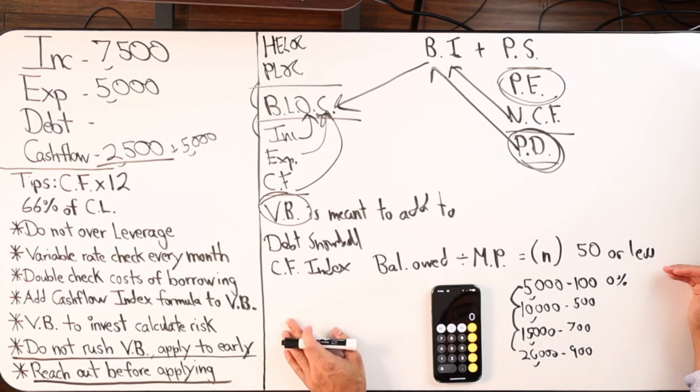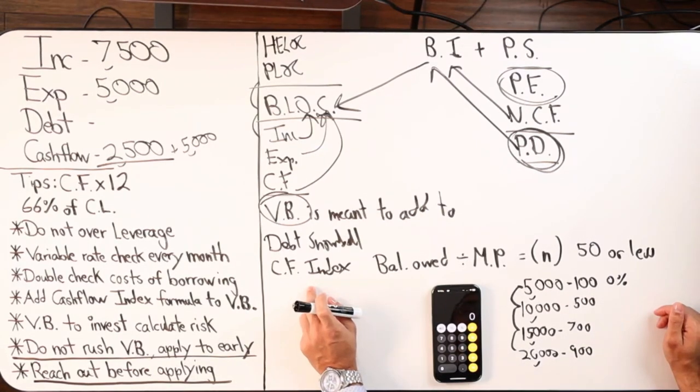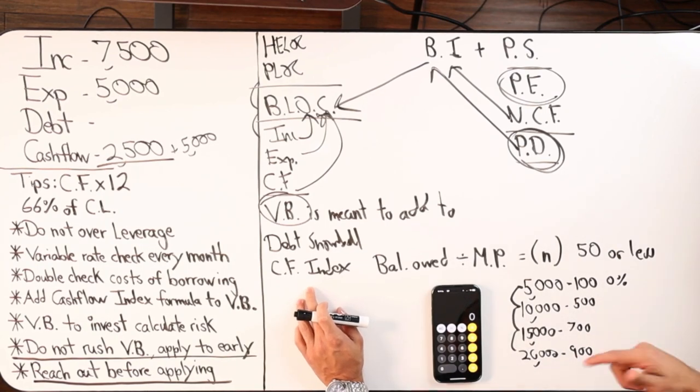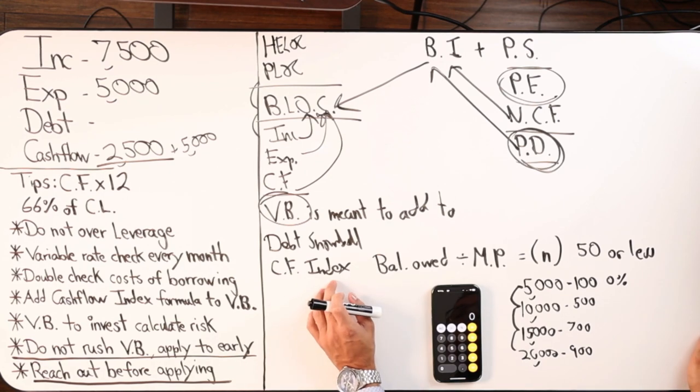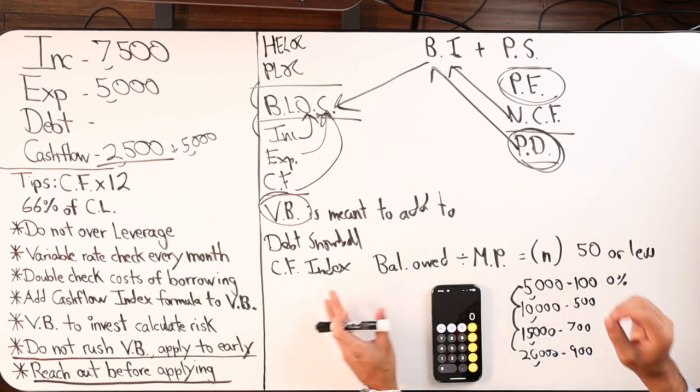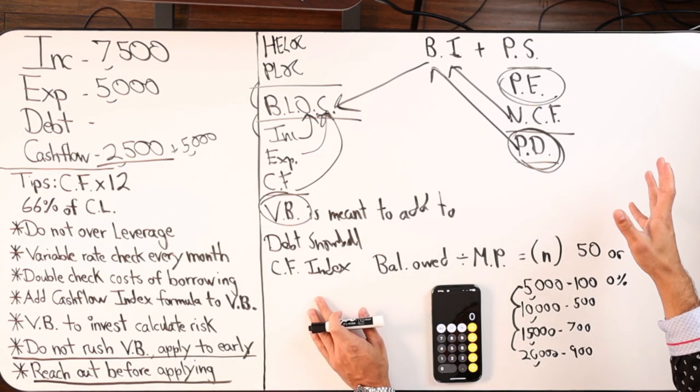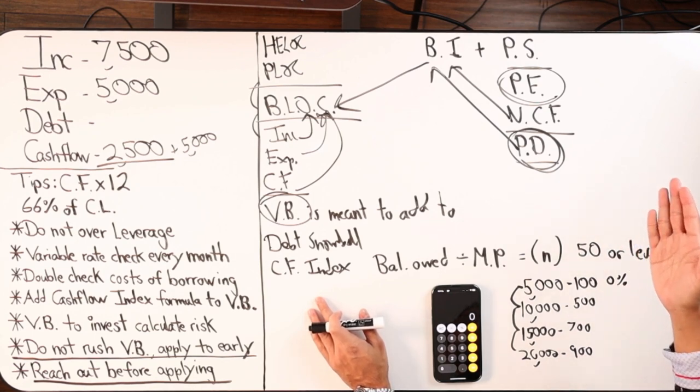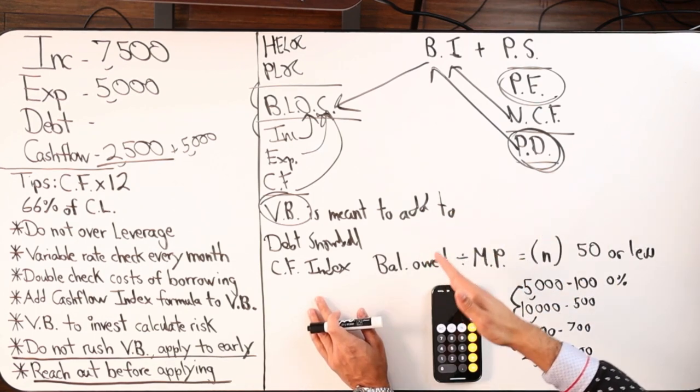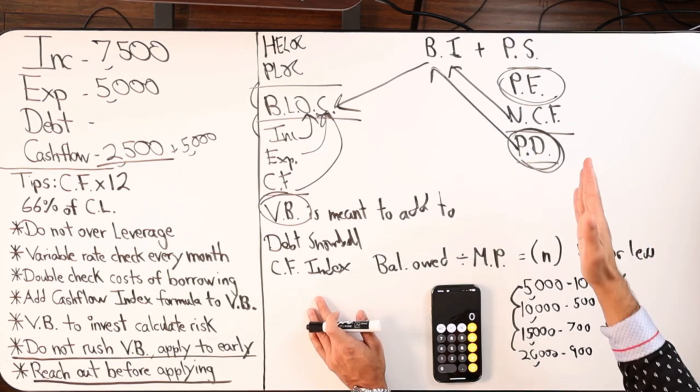When it doesn't, I'm taking cash flow index over snowball because I'm going to actually pay off debt faster. Cash flow index is not doing velocity banking; it's just telling you where to apply your money, which is really cool because that's going to improve velocity banking. It's going to tell us what to chunk at effectively.